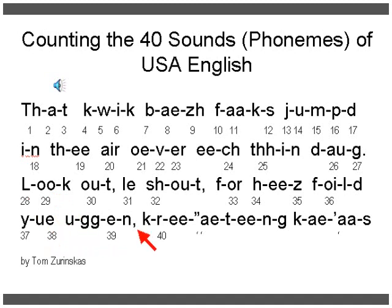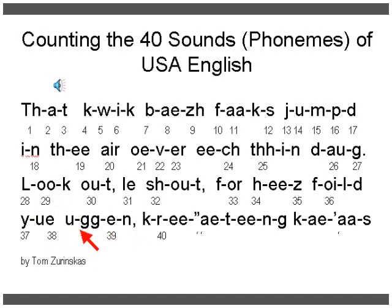Again — note the double G. That shows that stress is not on the usual default first syllable. If you see a double consonant, it means the next vowel is stressed. So it's 'aGAIN,' and that's the short E sound — that's how you spell the short E with just the letter E.